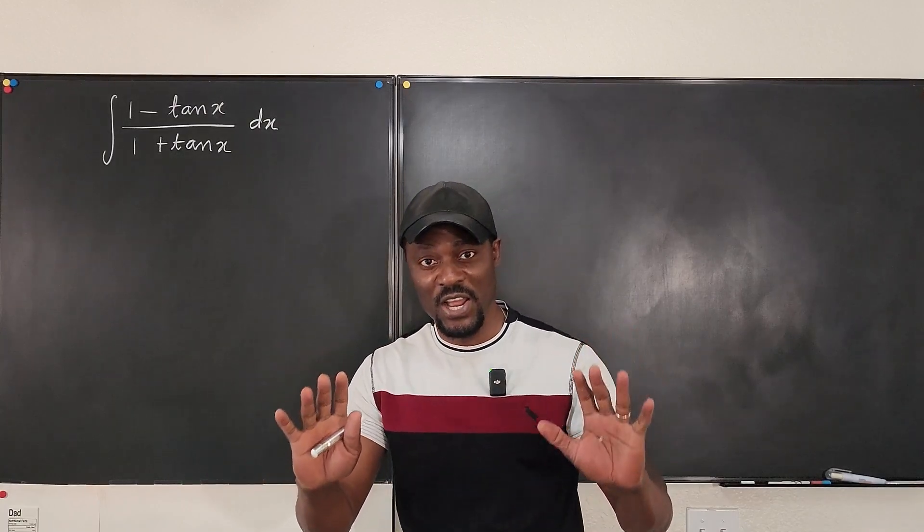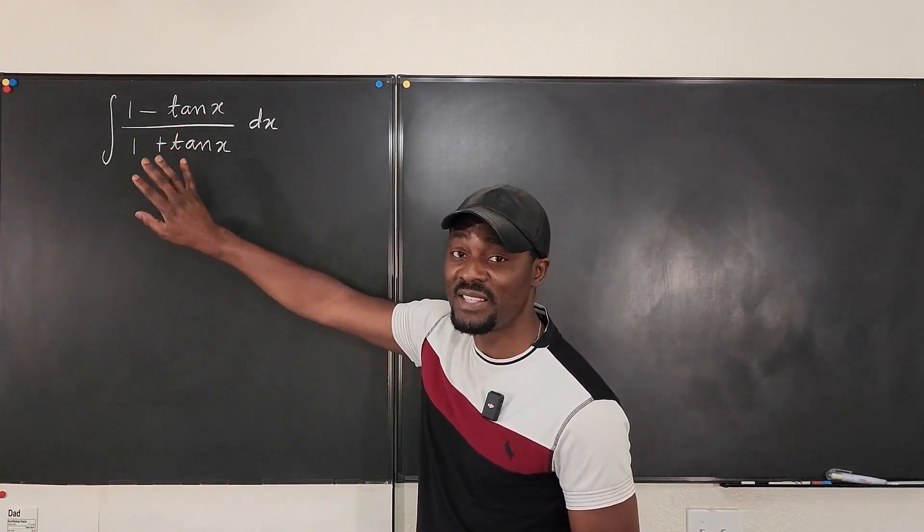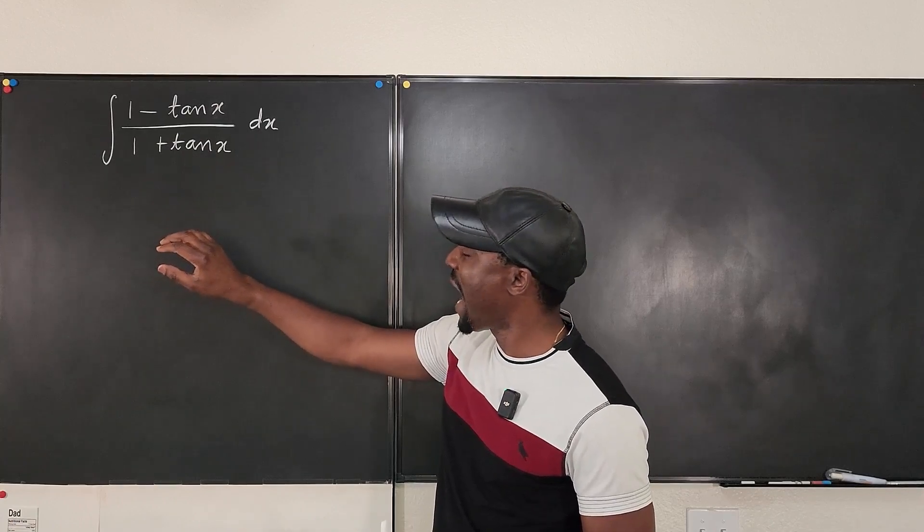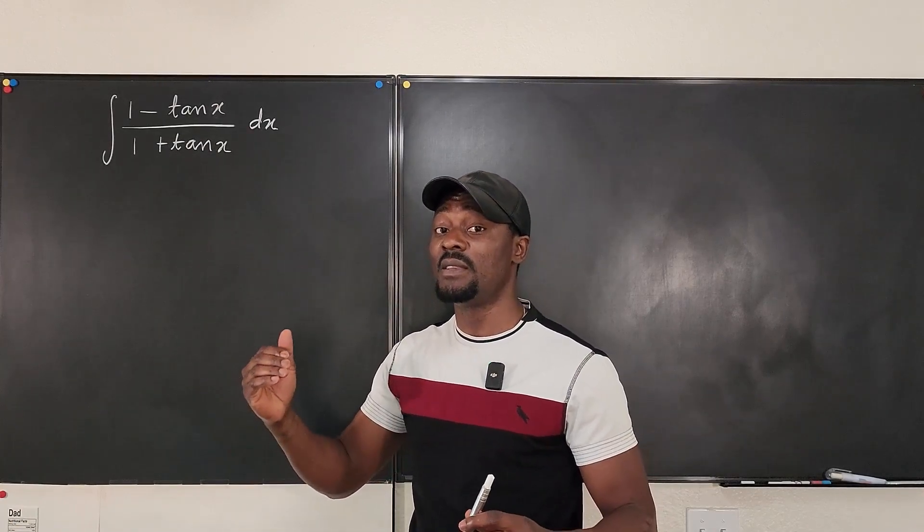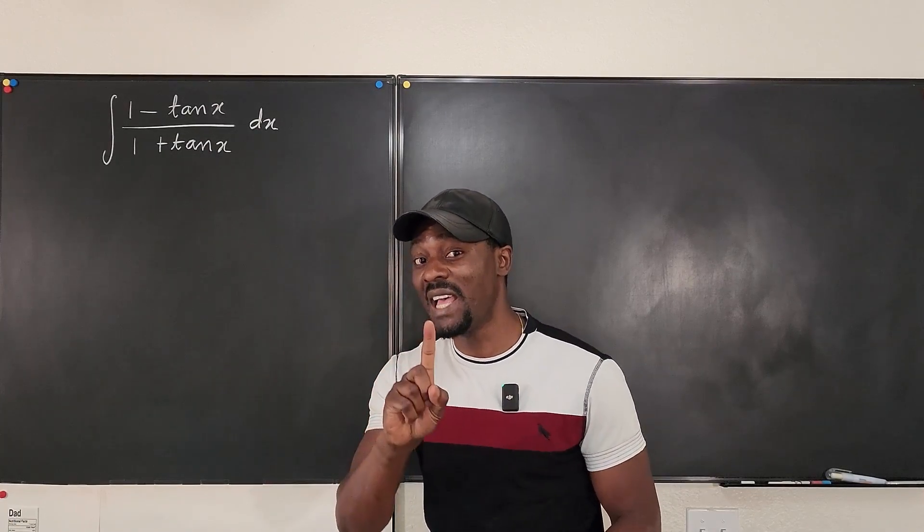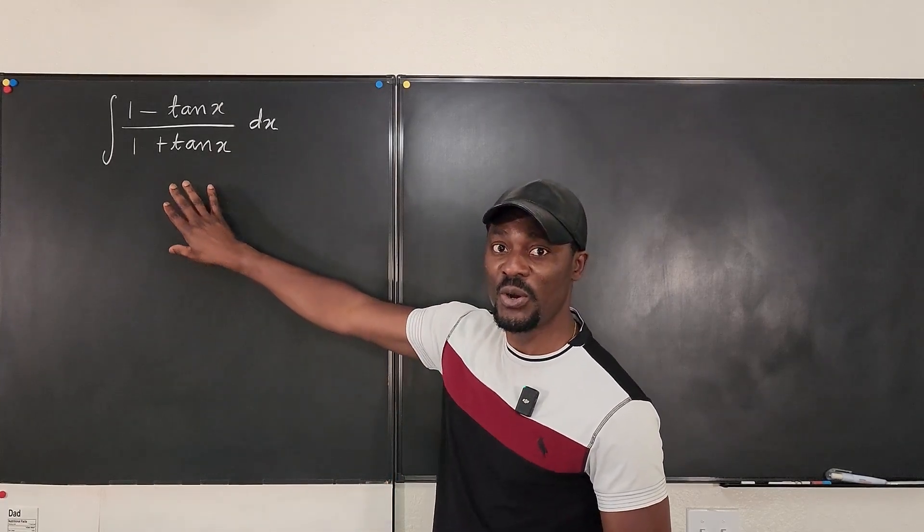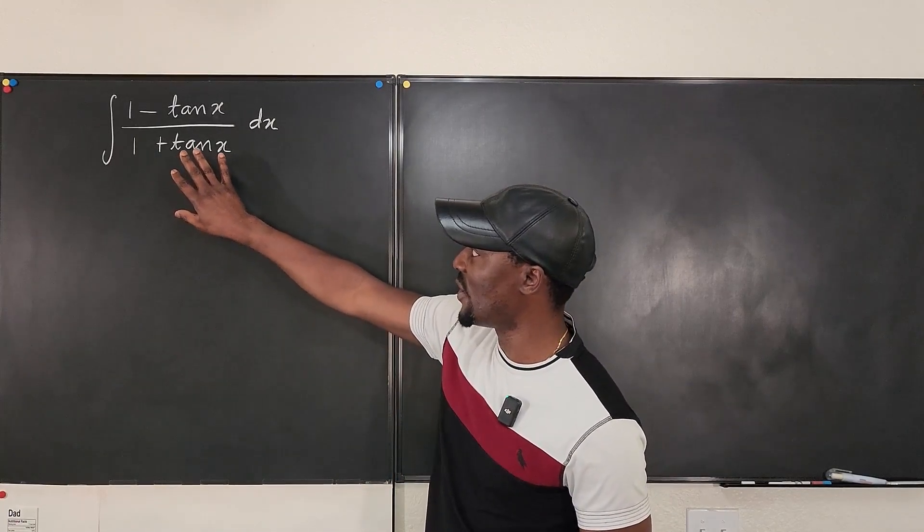Now, this is what I know. Whenever I have anything expressed as tangent, I quickly try to change it to be sine over cosine, unless I can clearly see where it's going. But obviously, I don't know where this is going.